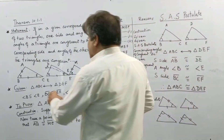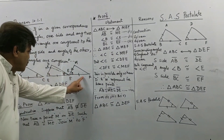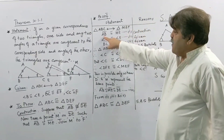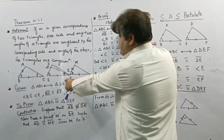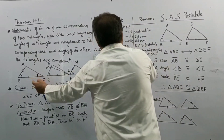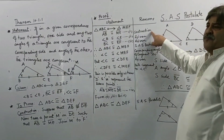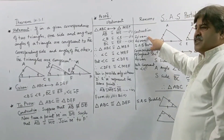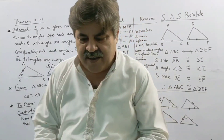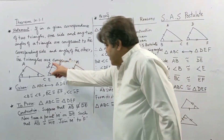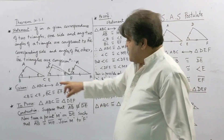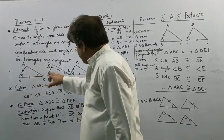So what do you see? Two sides and the included angle are congruent. Therefore the SAS postulate comes into play: AB is congruent to ME, angle B is congruent to angle E, and BC is congruent to EF. Therefore triangle ABC is congruent to triangle MEF by SAS.